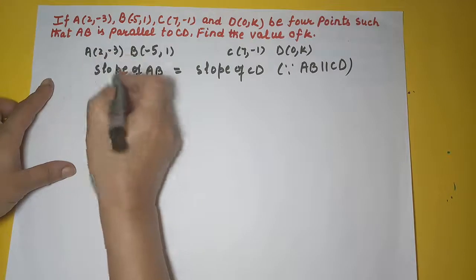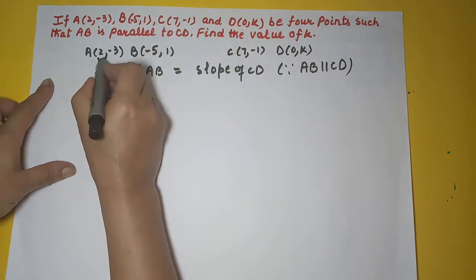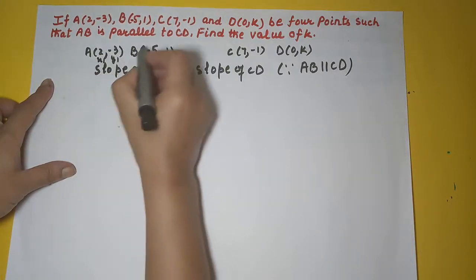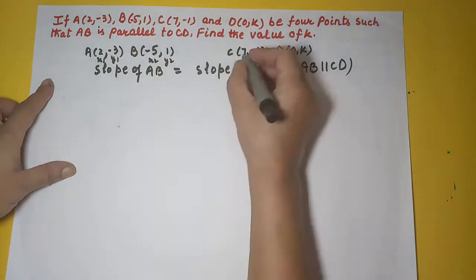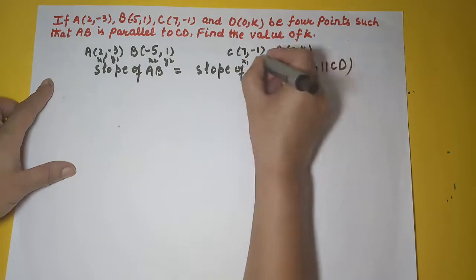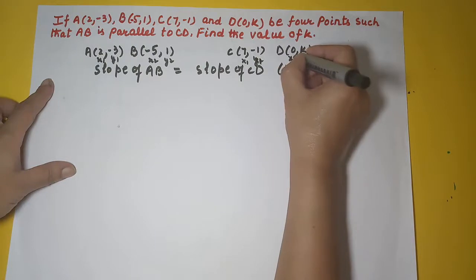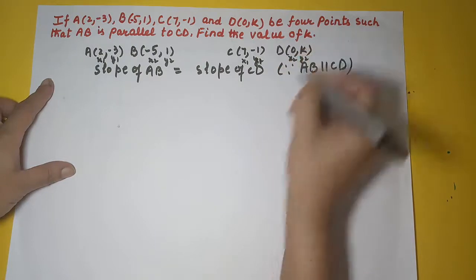So how do we find the slope of AB? This is my X1, this is my Y1, this becomes my X2, this is my Y2. Similarly here, this becomes my X1, this is my Y1, this is my X2, and this becomes my Y2.